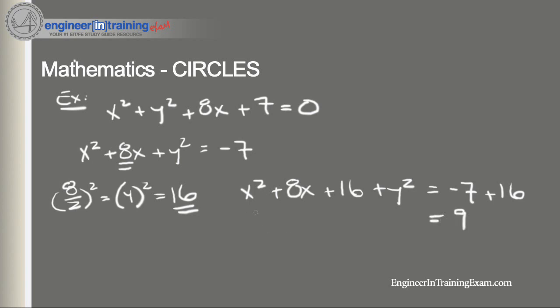And on the left side here now we can factor the x term such that it's equal to (x plus 4) squared plus y squared, which is also equal to (y minus 0) squared, is equal to 9.